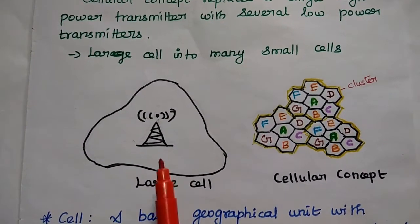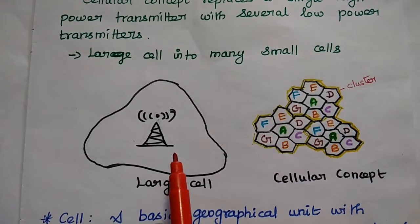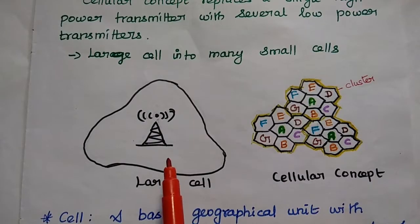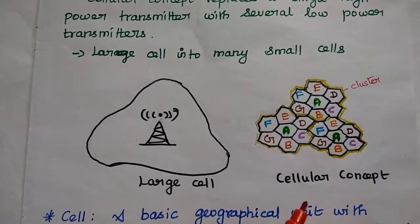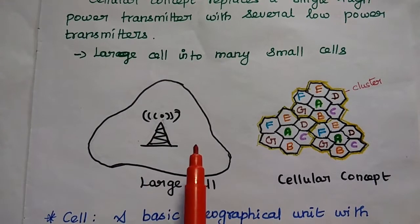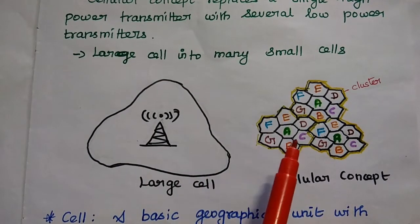In order to increase the spectral efficiency as well as to improve the user capacity, we can use the concept of cellular. That means the large cell is split into many small cells.